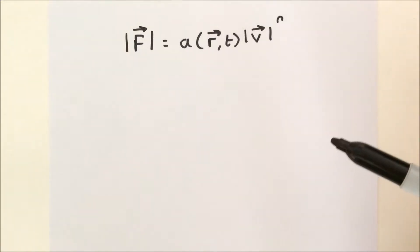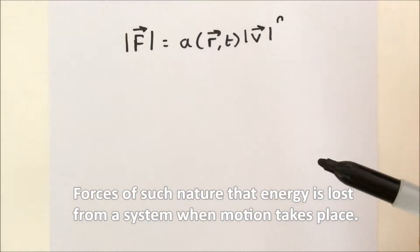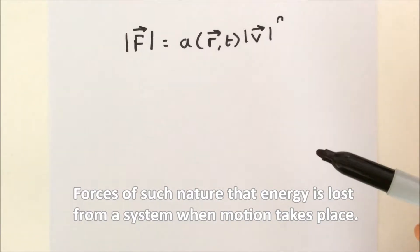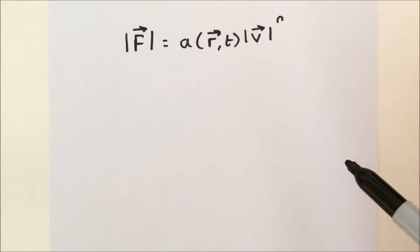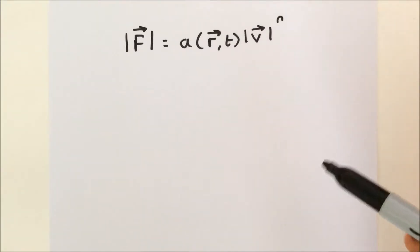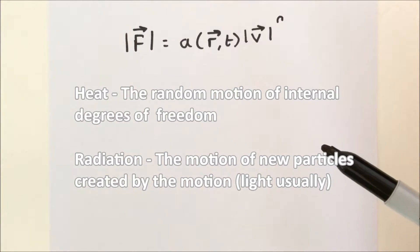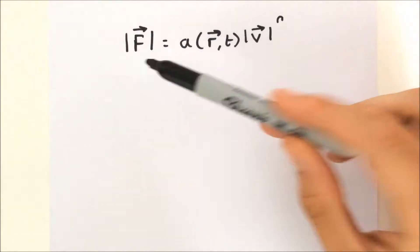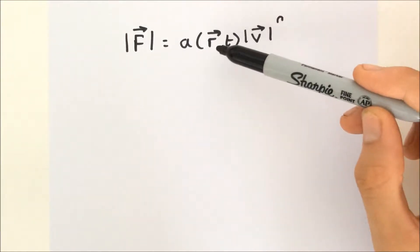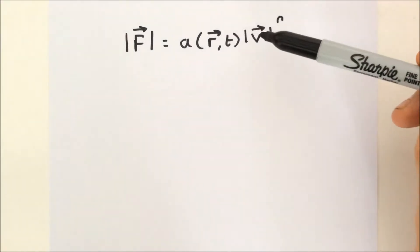Dissipative forces are forces of such nature that energy is lost from a system when motion takes place. Of course, energy is in general conserved, but it is lost from the degrees of freedom of interest into heat or radiation. The force can be represented by F equals A, which is a function of position and time, and the magnitude of our velocity.